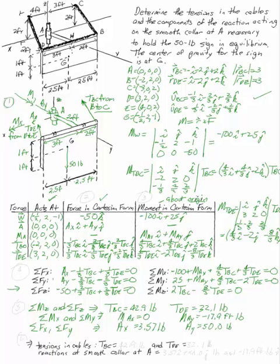Answer the question: the tensions in the cables are 42.9 pounds and 32.1 pounds respectively. The reactions at the smooth collar at A are 3.57i + 50.0j pounds and -17.9 ft·lb in the J direction.